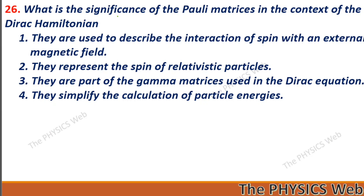Next: what is the significance of the Pauli matrices in the context of the Dirac Hamiltonian? They are used to describe the interaction of spin with an external magnetic field. So, one is your correct option.